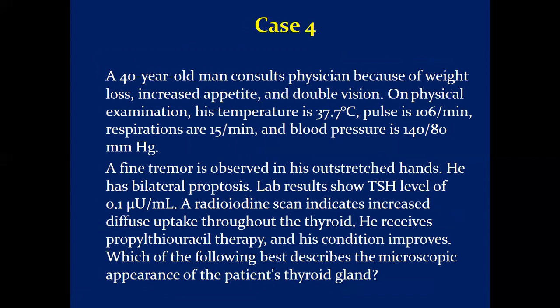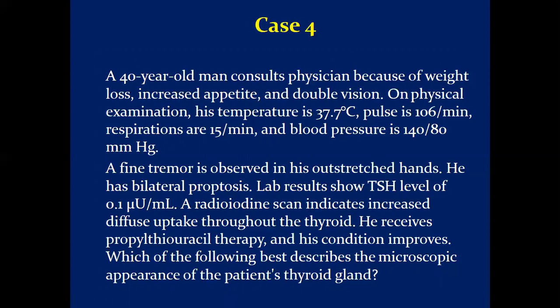Case 4: A 40-year-old man consults a physician because of weight loss, increased appetite, and double vision. On physical examination, temperature is 37°C, pulse is 106, respiration 15, blood pressure 140/80. There is a fine tremor in the outstretched hands — a characteristic feature — and bilateral proptosis. Lab results show a TSH level of 0.1. Radioiodine scan indicates increased diffuse uptake throughout the thyroid. He receives propylthiouracil and is being monitored.